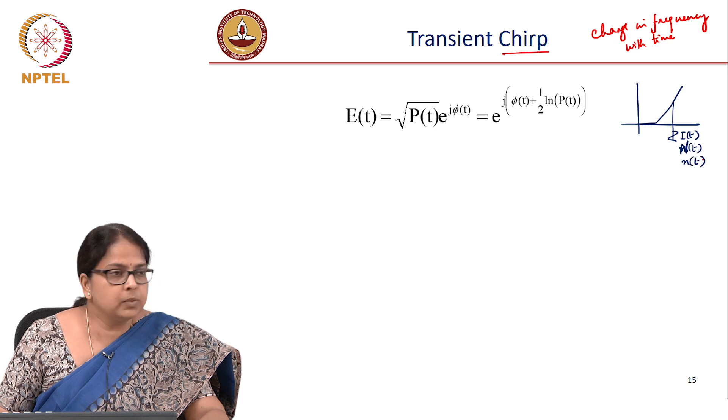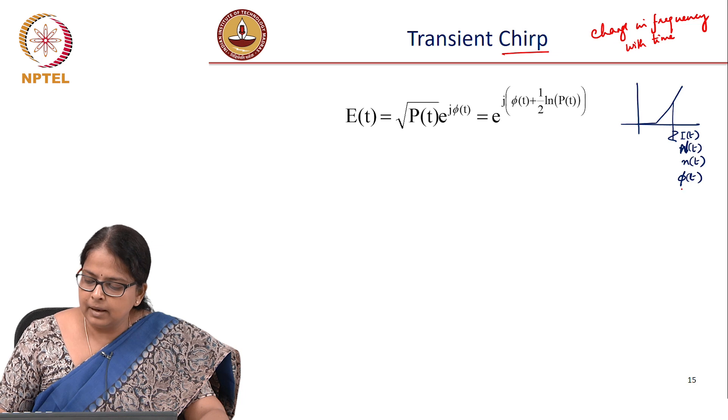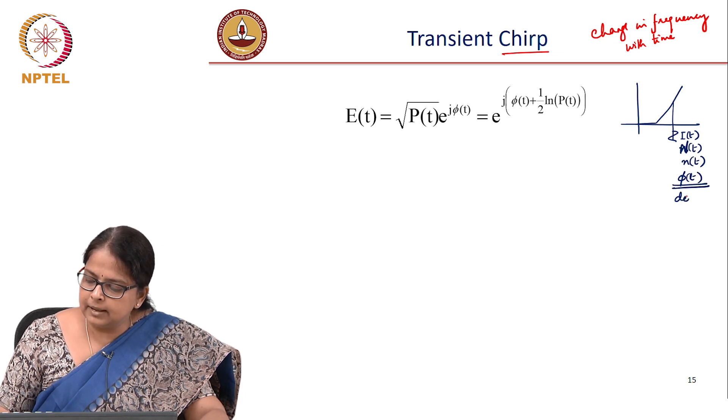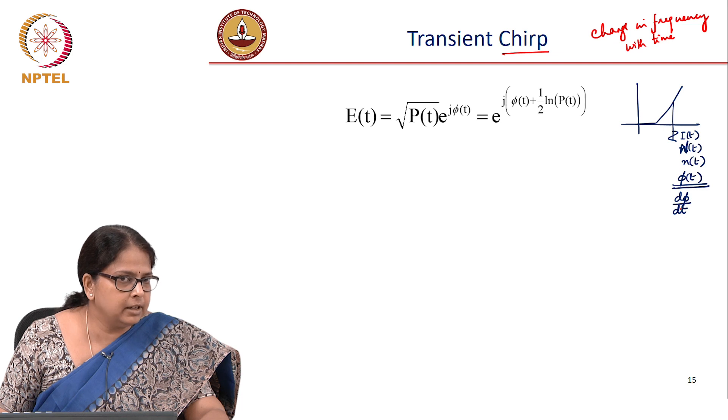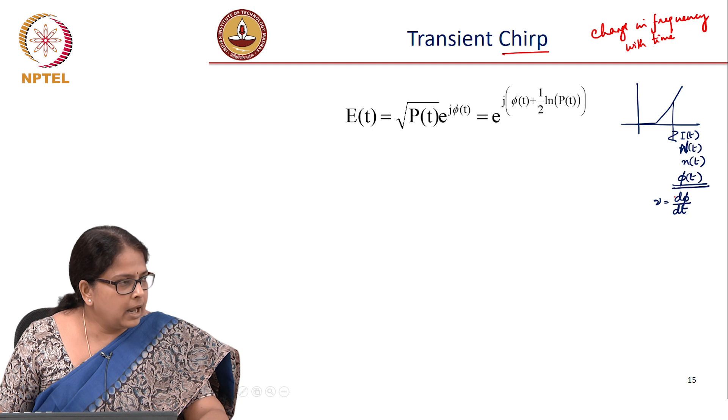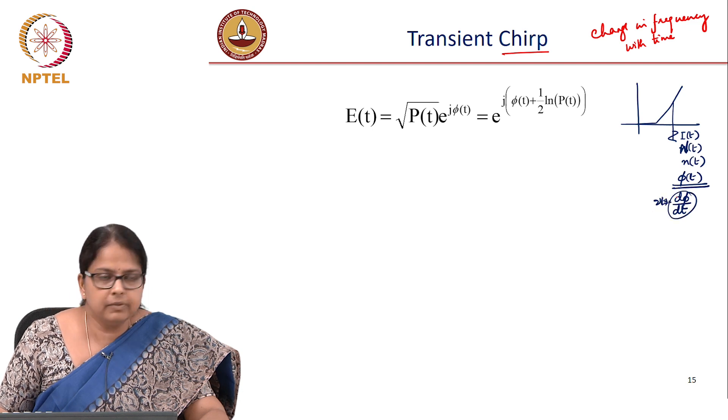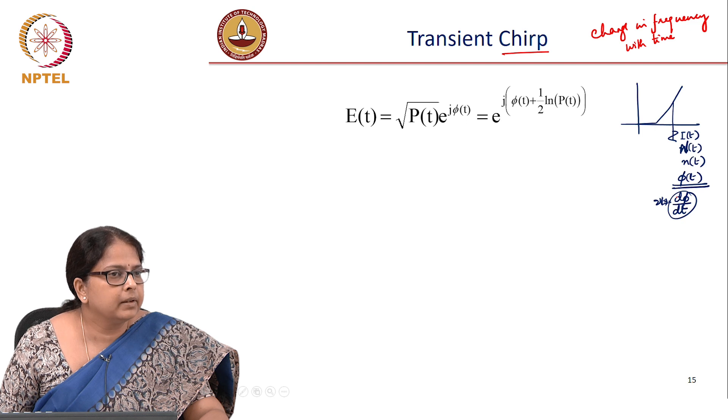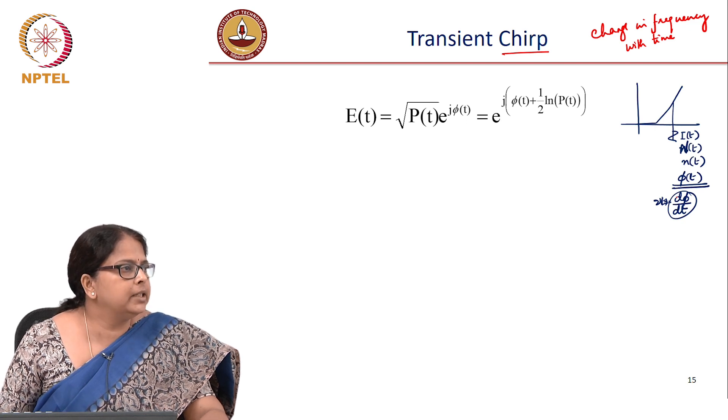My refractive index changes with time and so my phase changes with time, and because there is a phase change with time there is a d phi by dt. Phase is not constant, it is changing with time. There is d phi by dt which is nu, and depending on this phase change my nu could also change with time. That is how the instantaneous frequency changes with time.